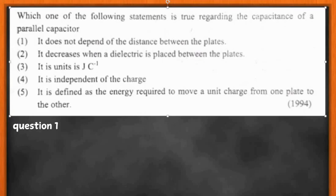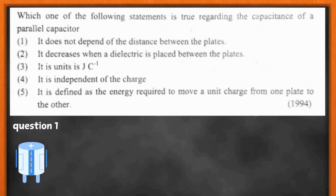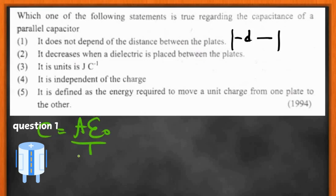This is our first question: which of the following statements is true regarding the capacitance of a parallel plate capacitor? The first option says it does not depend on the distance between the plates. We need the equation: C = A·ε₀/d, where d is the distance between the plates. Clearly capacitance does depend on d, so that statement is wrong.